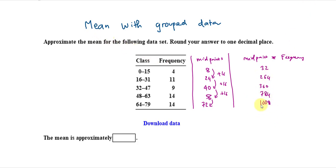Now, to find the mean, make sure we add all of the values together. So, we add 32 to 264 to 360 to 784 and 1008. If you add all of them together, you should get 2448.